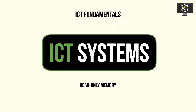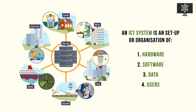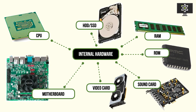Hi there everyone and welcome back to another simple science video. In this video, to continue our ICT system series, we're going to be looking at a different type of hardware known as read-only memory. From our previous videos, we've explored what an ICT system is and we've started to go into what hardware is and specifically the major types of hardware. As we've isolated internal hardware, we've looked at CPUs, HDDs and SSDs, or internal storage, and we've also got RAM. Now we're going to be looking at ROM.